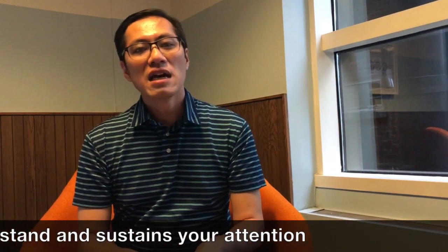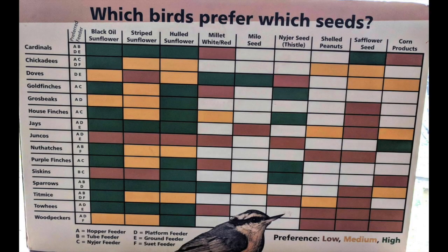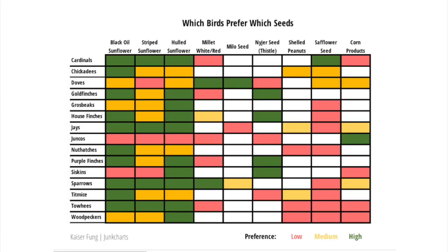A good chart is simple to understand and sustains your attention. I saw this chart on Reddit last year — the chart title is clear enough: 'which birds prefer which seeds.' But where is the answer? You're sorting through the red, the orange, and the green cells, and eventually you make your way to the bottom right corner to find the legend, and you discover that green means 'like.'